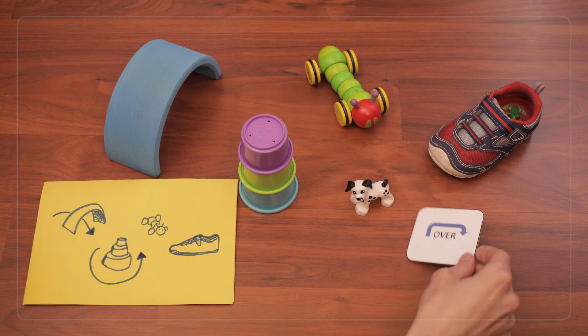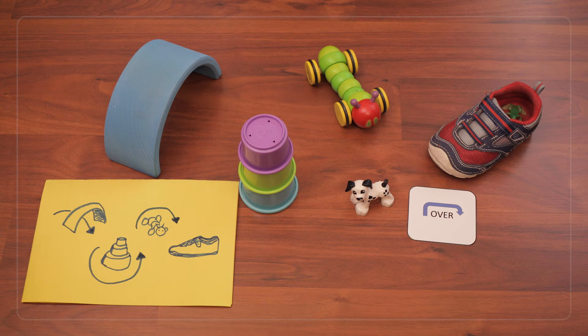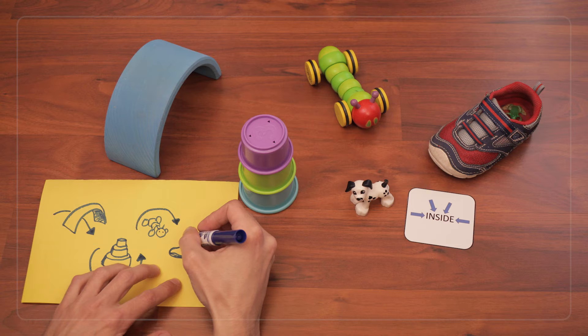Then at the caterpillar, I remember that we went over. So I draw an arrow over the caterpillar on my map. And then finally we went inside the shoe, which I can draw like this.